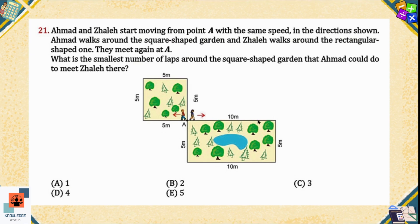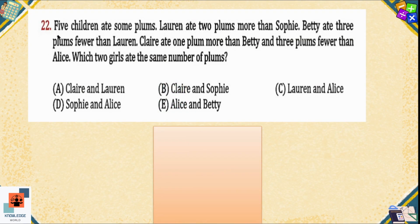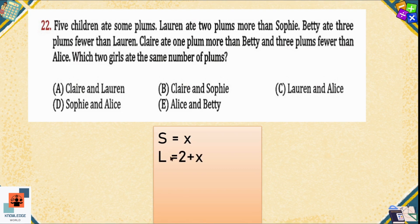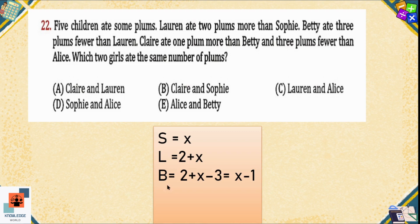Question 22: Five children ate some plums. Lauren ate two plums more than Sophie. We do not know how many plums Sophie ate, so we write Sophie's count as x. Lauren equals x plus two. The next instruction: Betty ate three plums fewer than Lauren. Fewer means less than Lauren, so Betty equals Lauren's plums (x plus two) minus three.